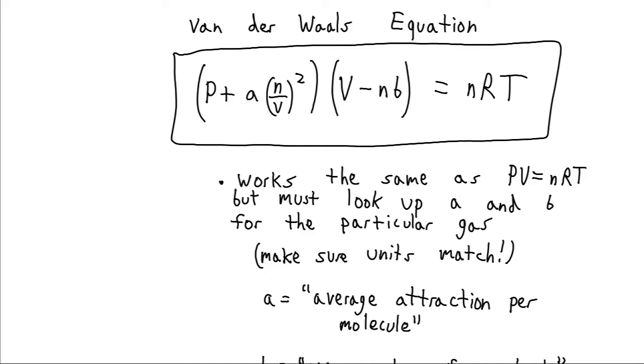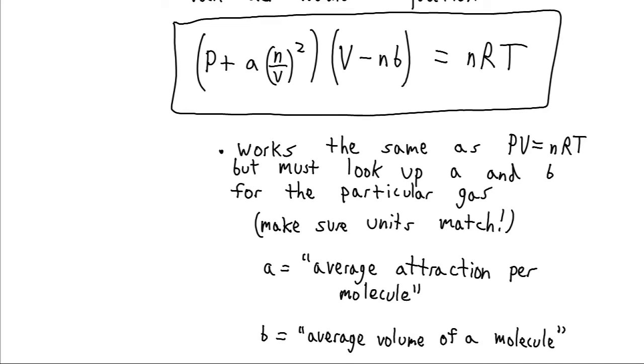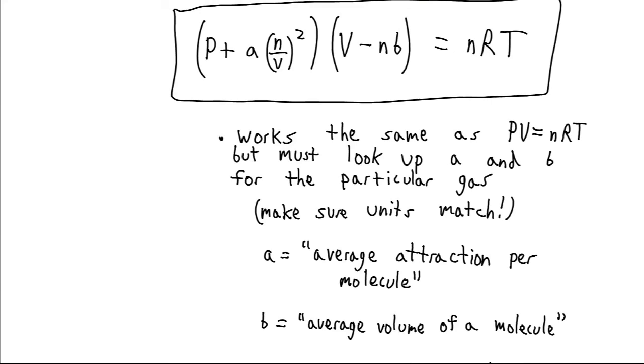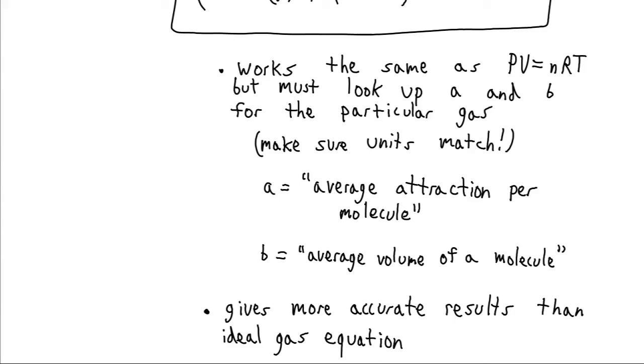So in this model, A represents the average attraction per molecule. So our pressure overall gets reduced by those attractions. And B represents our volume of individual molecules. And our volume gets reduced by the total volume of gas molecules in the container.